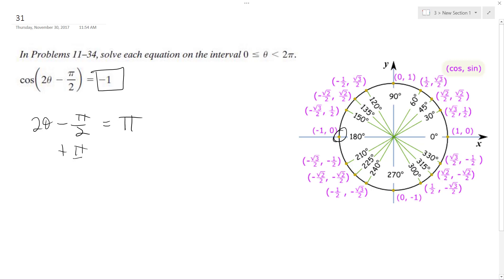So add pi over 2 to both sides. I get 2 theta is equal to 3 pi over 2, then divide by 2 again. So I get theta is equal to 3 pi over 4.